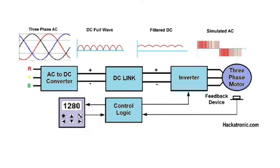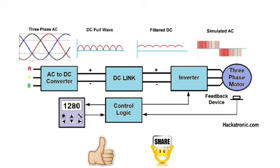Now let's talk about the working principle of VFD. First, we supply three-phase AC to the converter. In the converter, it converts the AC value into a DC value. Further, it supplies into the DC bus, where it gives a filtered DC value.